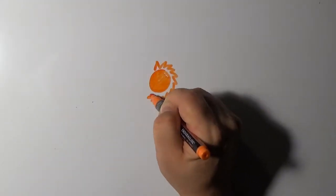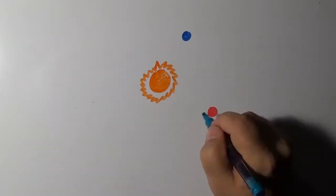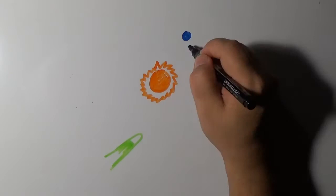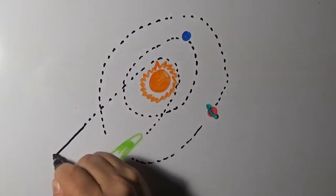Gravity fills all of space and holds the planets in orbit around the sun. No matter how far away you are, you still feel the sun's gravity pulling you in your orbit around the sun.